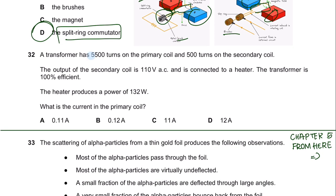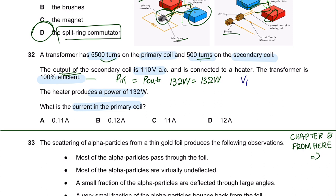Question 32. A transformer has 5,500 turns on the primary coil and 500 turns on the secondary coil. The output of the secondary coil is 100 V AC connected to a heater, and the transformer is 100% efficient. 100% efficient means power in equals power out. The heater produces 132 W, so 132 W in gives 132 W out. Using Vp/Vs = Np/Ns and substituting the values, the primary voltage is 1210 V.